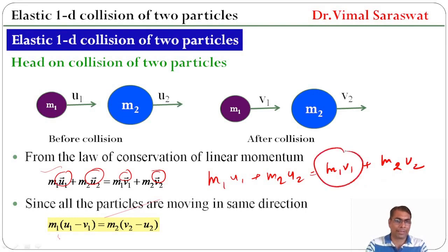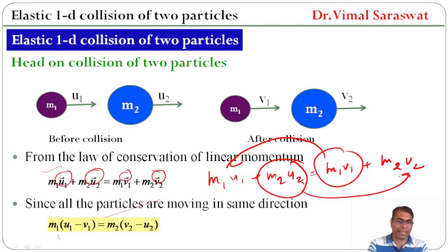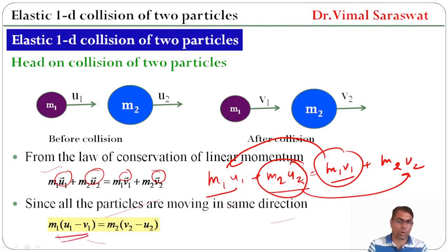We transfer M1·V1 to the left side and M2·U2 to the right side. On taking M1 common in these two quantities, we get M1(U1 − V1). And on taking M2 common in these two quantities, we get M2(V2 − U2).